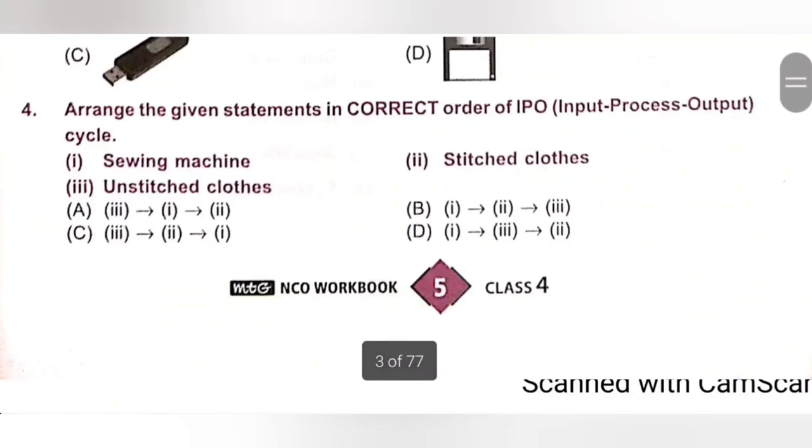Fourth. Arrange the given statements in correct order of IPO, that is Input-Process-Output cycle. 1. Sewing machine. 2. Stitched cloth. 3. Unstitched cloth.